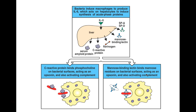The acute phase proteins include serum amyloid protein, C-reactive protein, fibrinogen, mannose-binding lectin, and SP-A and SP-D. Notice that the illustration of SP-A, SP-D, and MBL look structurally similar to C1Q. Of these different acute phase proteins, the two that are important for complement activation will be CRP (C-reactive protein) and MBL (mannose-binding lectin).